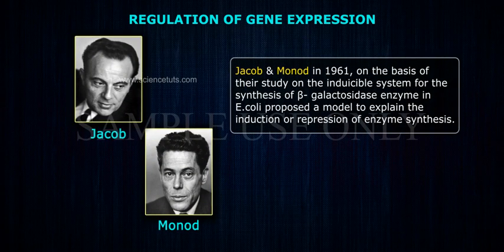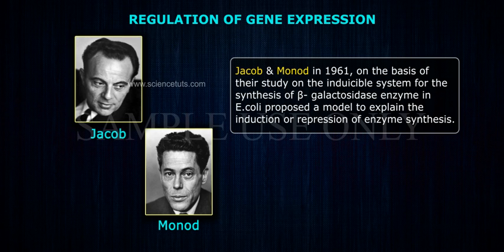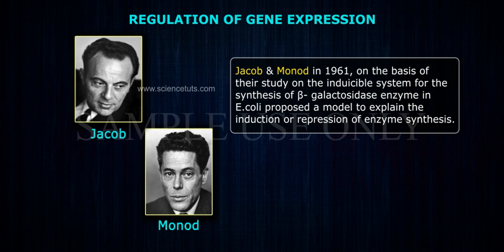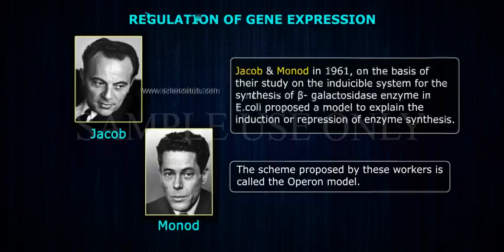Jacob and Monod in 1961, on the basis of a study on the inducible system for the synthesis of beta-galactosidase enzyme in E. coli, proposed a model to explain the induction or repression of enzyme synthesis. The scheme proposed by these workers is called the operon model.